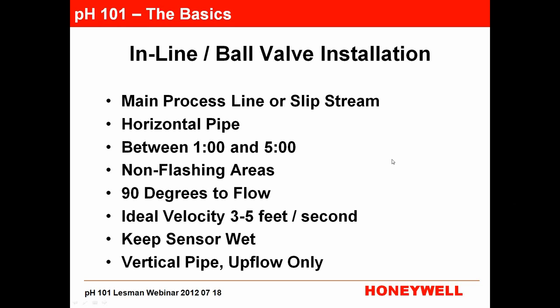If you have to use a vertical pipe installation, do it as upflow only. In a downflow pipe, there can be periods with no flow causing drying. More commonly, in a downflow pipe you can't guarantee the pipe is full, leading to water hammer — instantaneous periods of no flow and then surge — which beats up your pH sensor. A pH sensor is essentially a laboratory device that we keep trying to make more able to withstand the rigors of process, so try not to damage it unnecessarily.